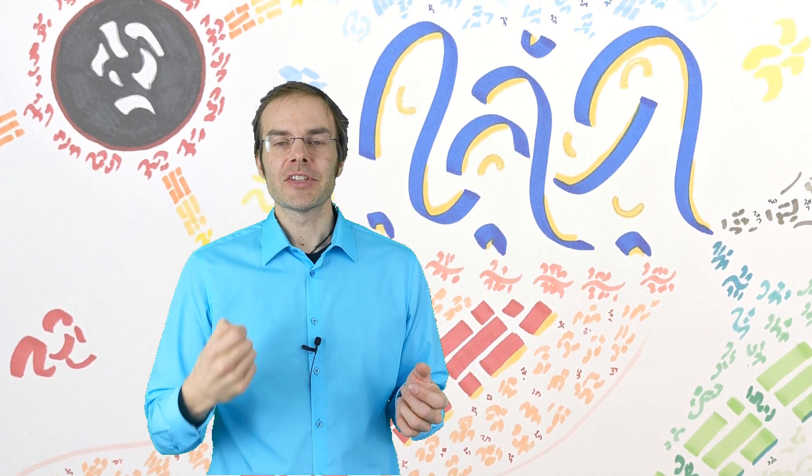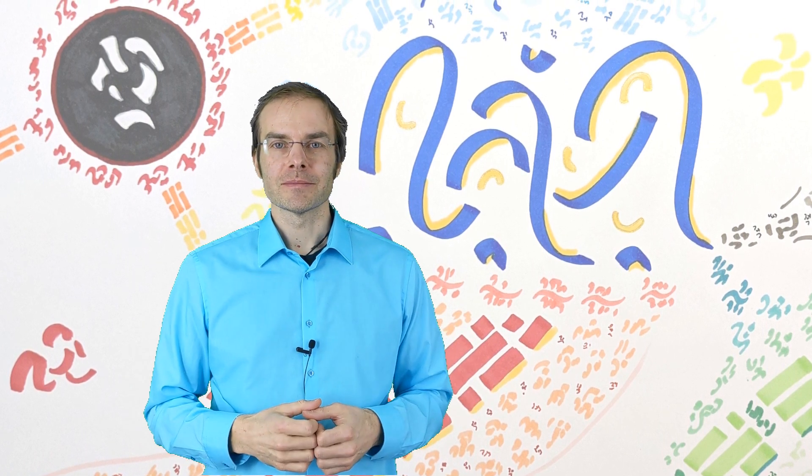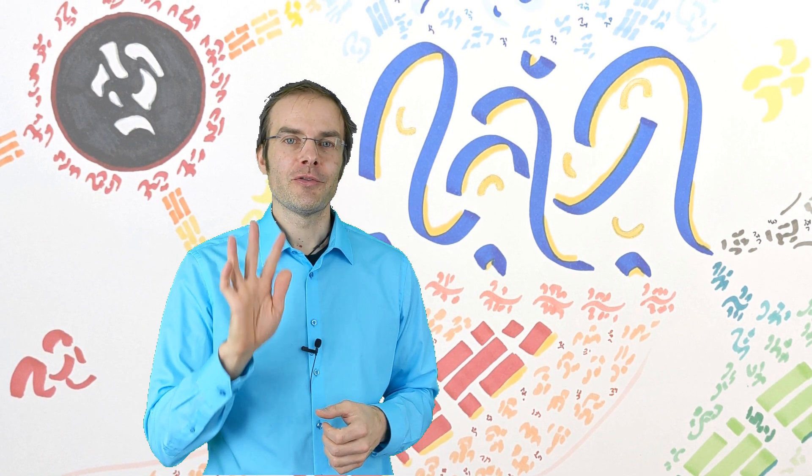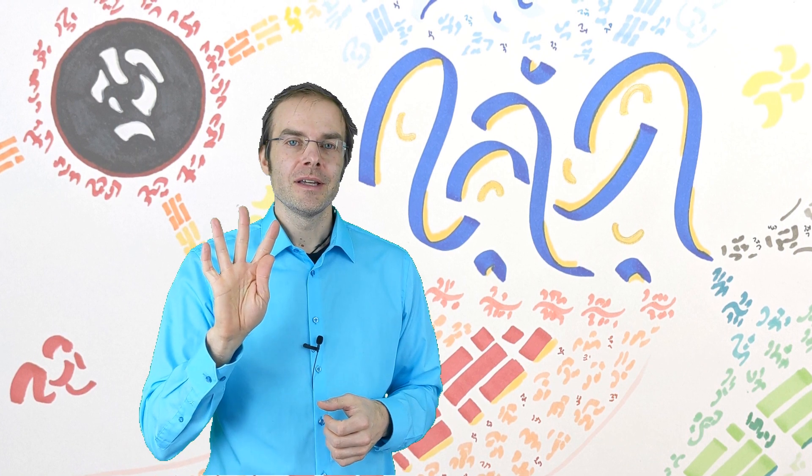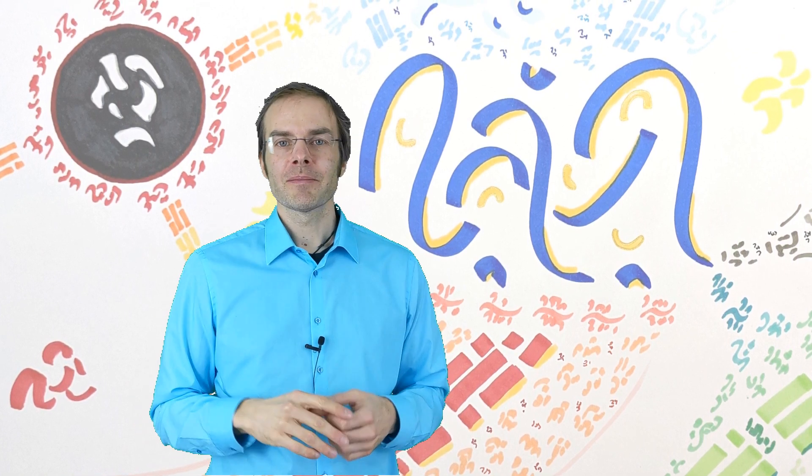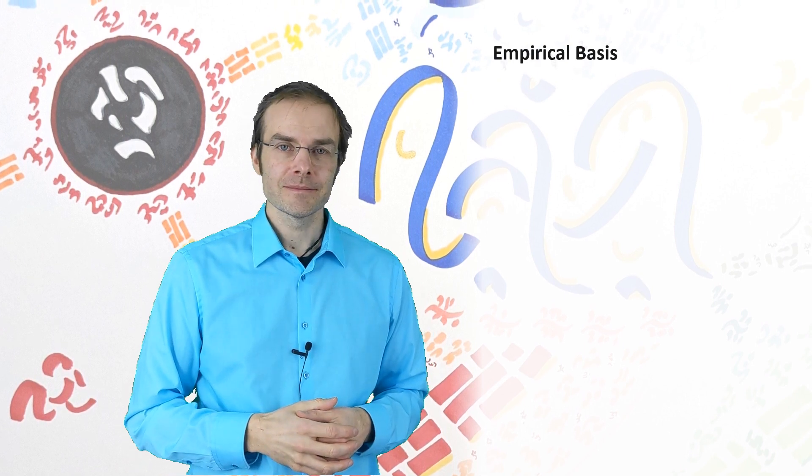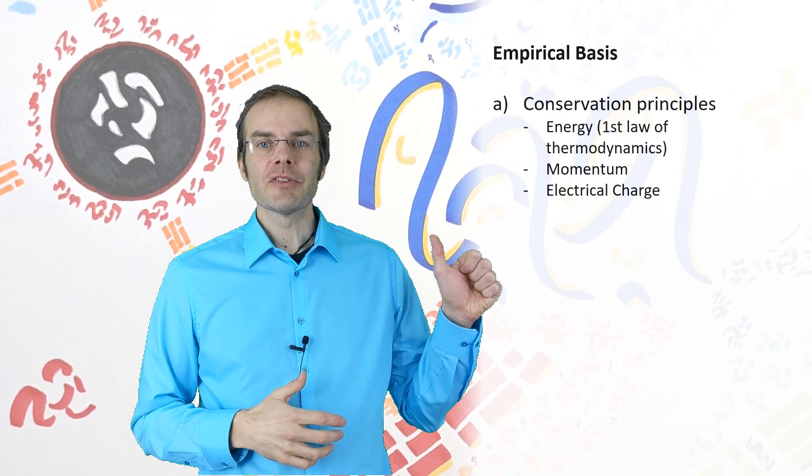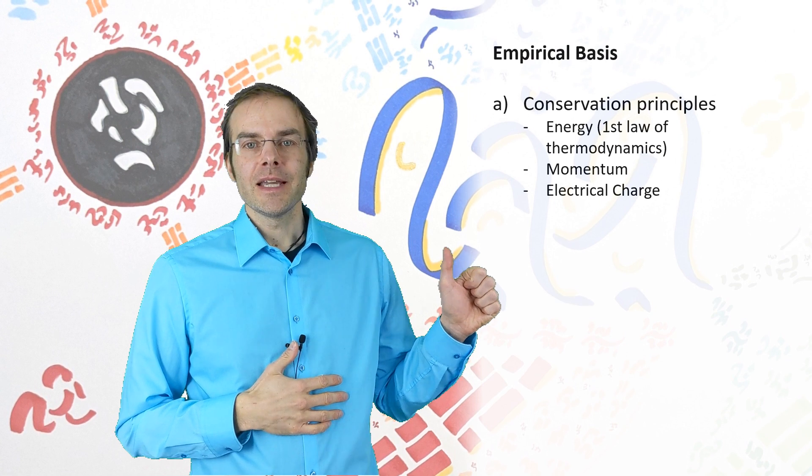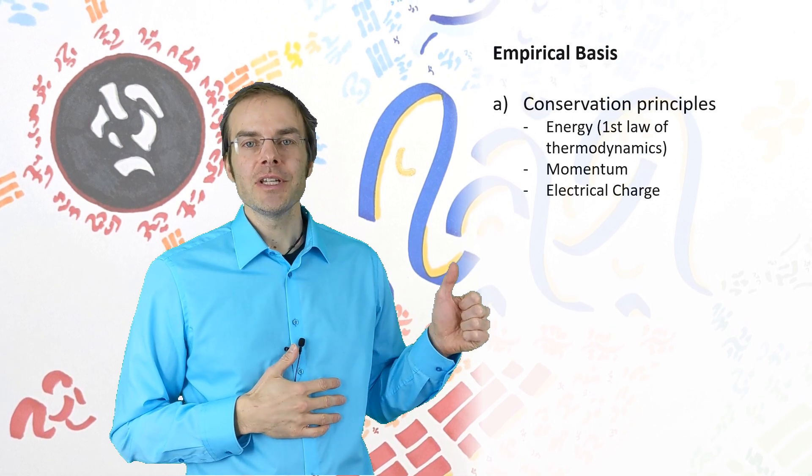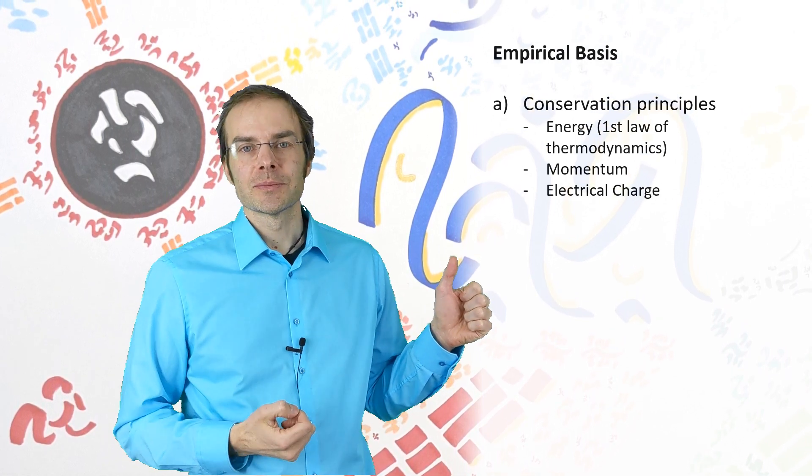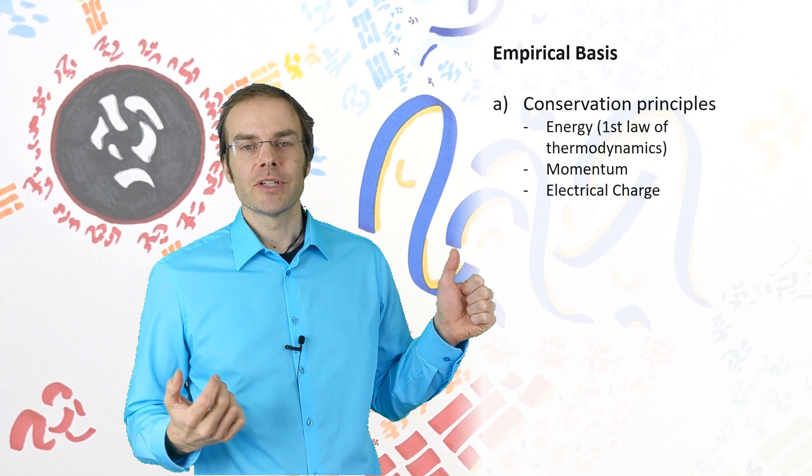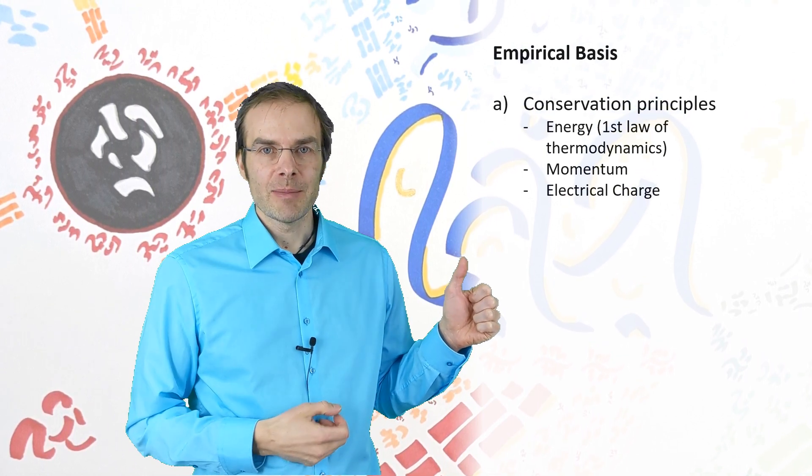He retracted to the basic observations and experience on which we can base any physical description of the world. And he found four basic assumptions or basic statements, which he stated in the beginning of his first book. First, there are principles of conservation in nature like the conservation of energy or momentum or electrical charge, formulated, for example, in the first law of thermodynamics.